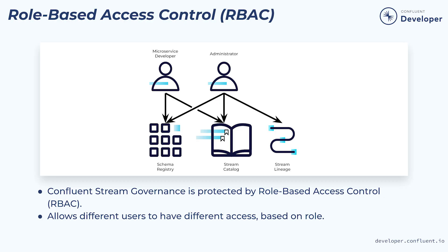The Stream Governance features in Confluent Cloud are protected by Role-Based Access Control, or RBAC. It allows us to customize user access based on specific roles assigned to that user. For example, someone in the role of administrator will have very different access needs compared to a developer working on a single microservice. As a result, we'd assign different roles to each user to restrict what they have access to.